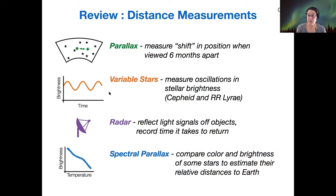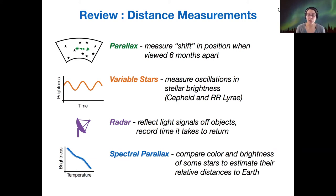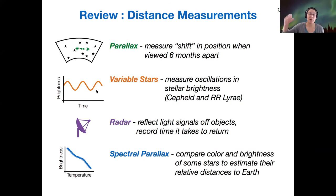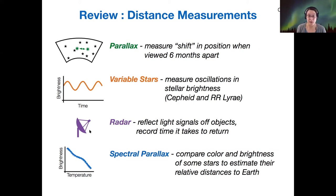The method of variable stars has come up a couple of times. Henrietta Swan Leavitt discovered the Cepheid variable stars, and those were used to measure distances to Andromeda — our first intergalactic distance measurement. The RR Lyrae variable stars used a similar method but for a different type of variable star to measure distances to globular clusters in our Milky Way. Then there's radar, where you bounce light off nearby objects like planets and use the travel time of that light to calculate distance.